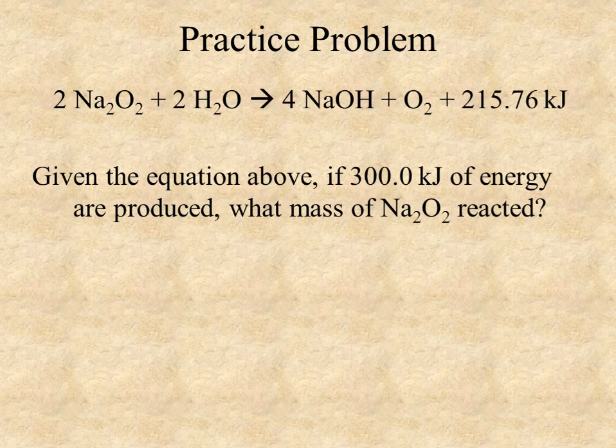In this next problem, we have the same equation, but we're asked, if we have a certain amount of energy produced, we're asked to backtrack and determine what mass of the sodium peroxide reacted. And this can be useful if you are talking about, say, a combustion reaction, and you need a particular amount of energy minimum, this kind of problem can help you determine exactly how much fuel you'll need to burn to achieve that amount of energy.